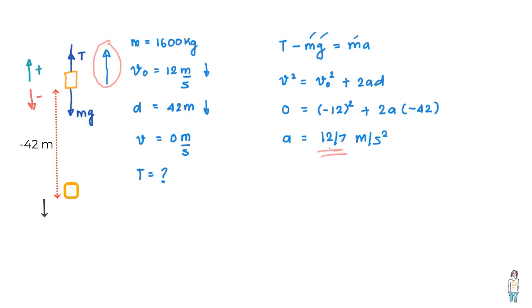So we write T minus 1600 into 10 is equal to 1600 into 12 by 7, and when you solve for T what you get is T is equal to 1.8 into 10 to the power 4 Newton.